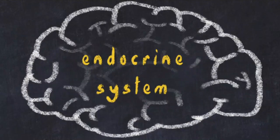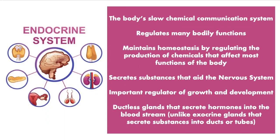Now we're going to focus on the endocrine system. The endocrine system is summarized by the following descriptions. It's a slow chemical communication system. It regulates many different body functions. It maintains homeostasis, which means it creates a balance in these body systems by regulating the production of chemicals that affect those functions of the body.